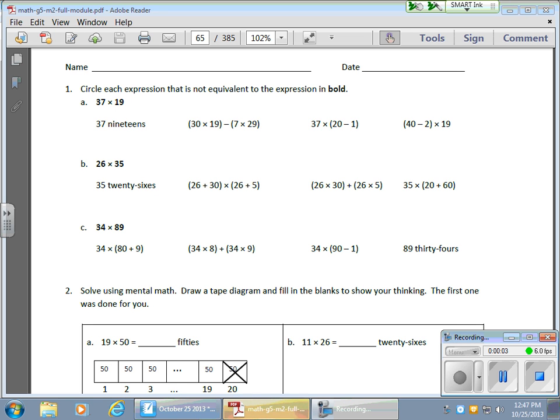Okay, so in today's lesson, what we're learning is how to use mental math to evaluate expressions. In our first set here, what we're doing is comparing expressions, finding out if two expressions are equivalent or if they're not equivalent. So basically what we're doing here is taking 37 times 19, and we're taking a look at four other expressions to find out if any of these are equivalent or not equivalent.